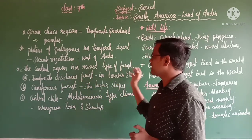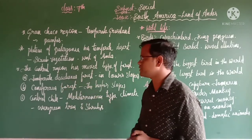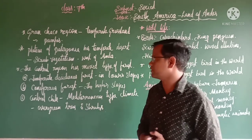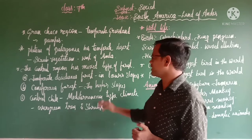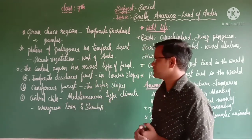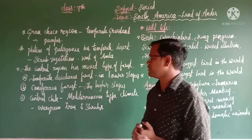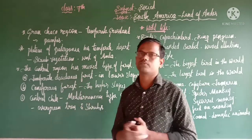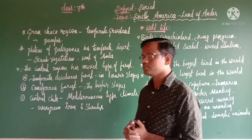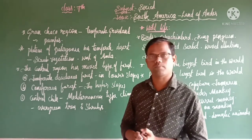The central region has a mixed type of forest: temperate deciduous forest, conifer forest, and Mediterranean type of climate vegetation. The temperate deciduous forest is located on the lower slopes, while conifer forest is on the higher slopes. The Mediterranean type of climate is found in the central part of the Chilean region, where evergreen trees and shrubs are found. This is about the climate of South America.